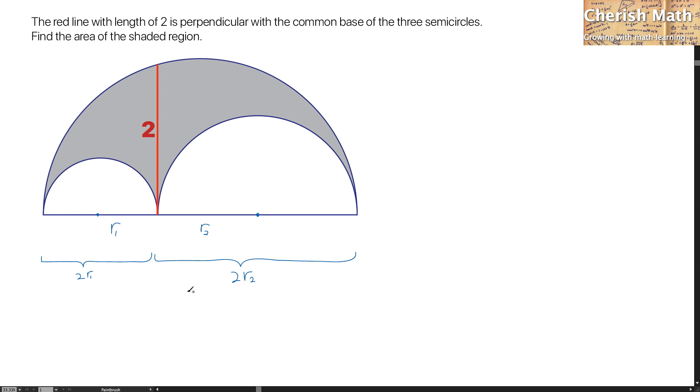For the radius of the largest semicircle, that would be 2R1 plus 2R2 divided by 2, and it is R1 plus R2.